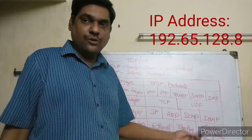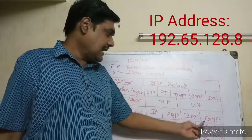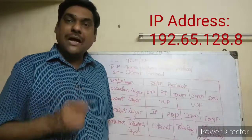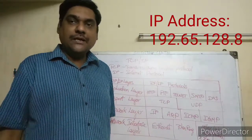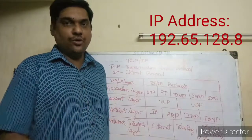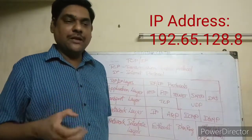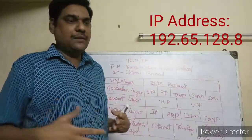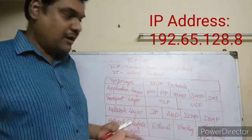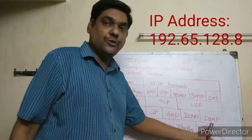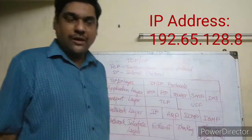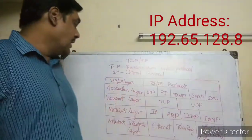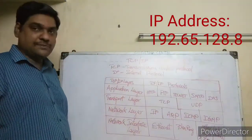IGMP stands for Internet Group Management Protocol. This protocol is used when a message needs to be sent to a group — for example, a WhatsApp group or a mailing group — where the same message is delivered to multiple recipients simultaneously.